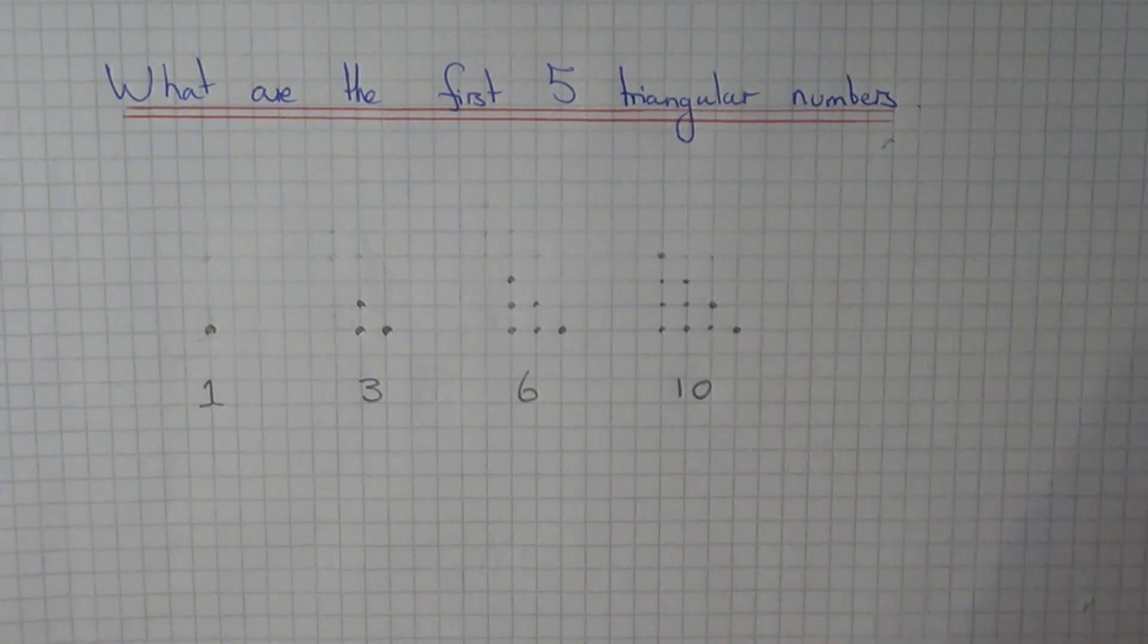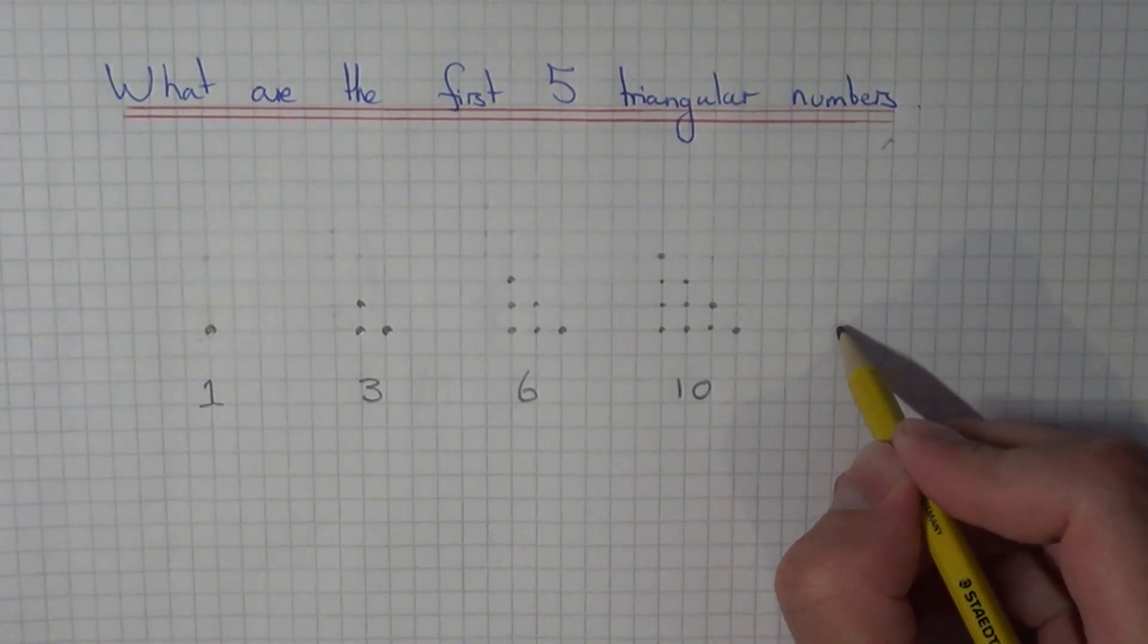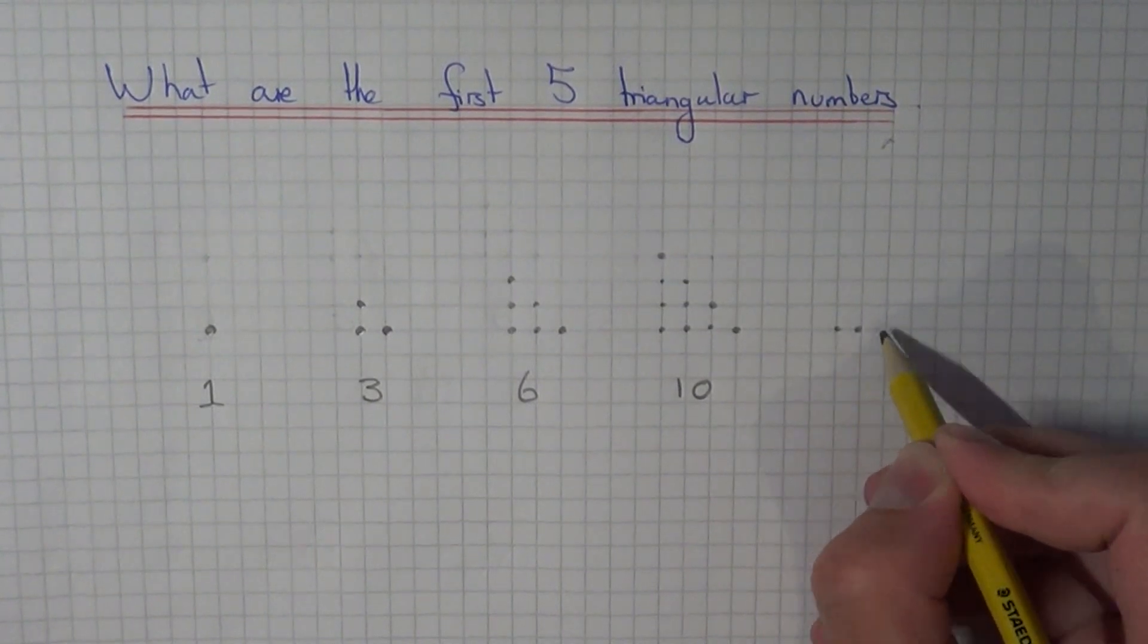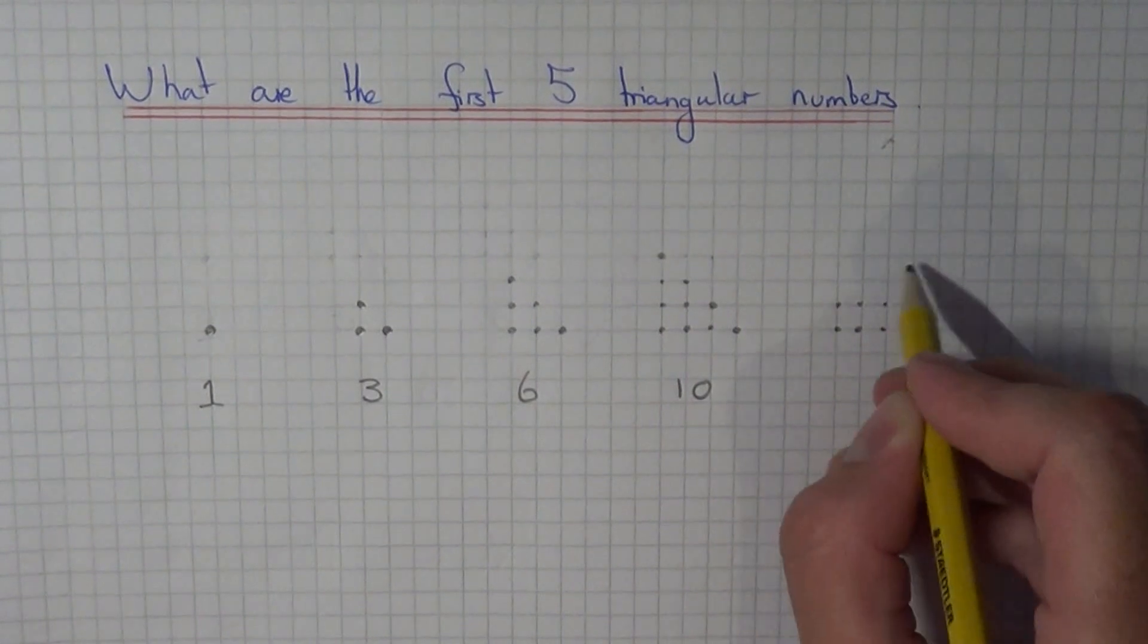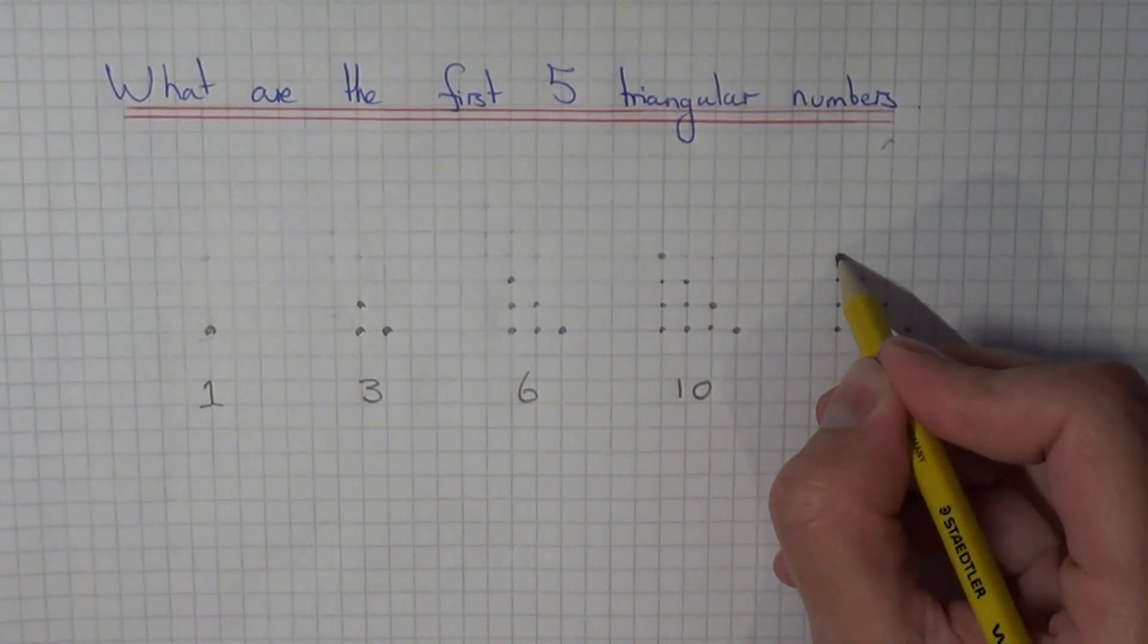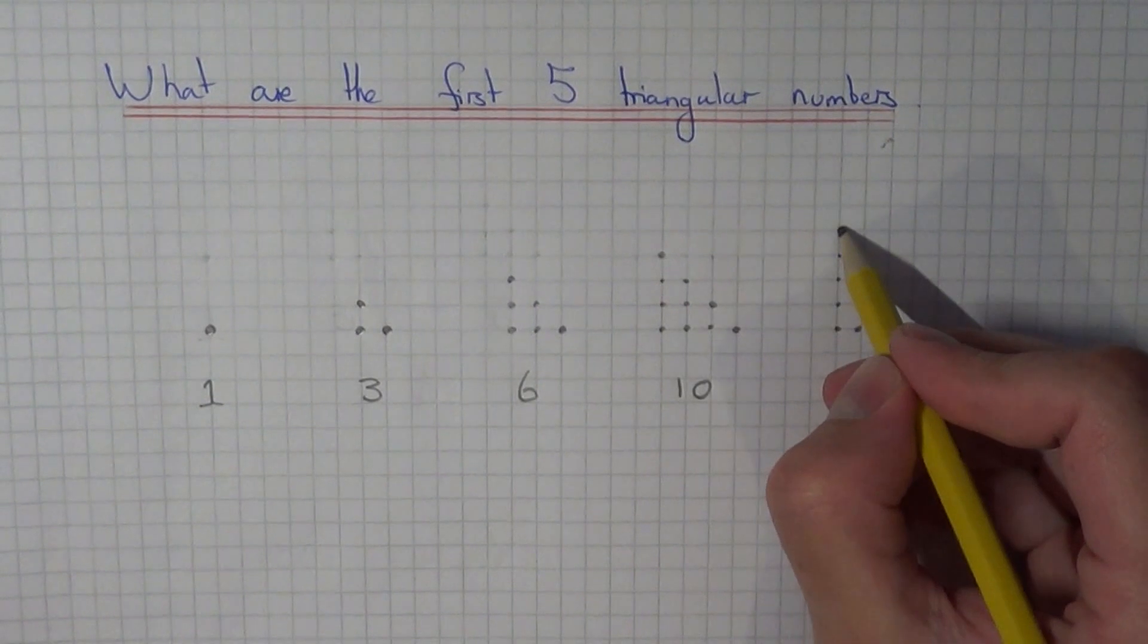So all together now we have ten dots in the pattern, so that's our fourth triangular number. So our final fifth triangular number, so again let's just make the pattern that we've just done.